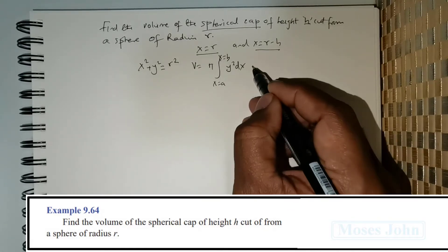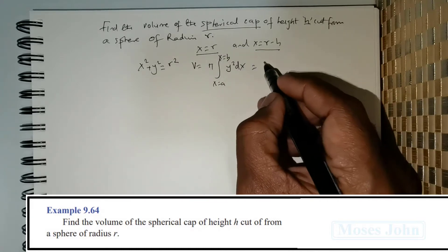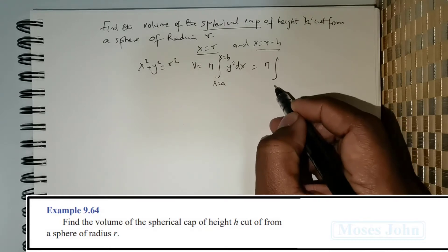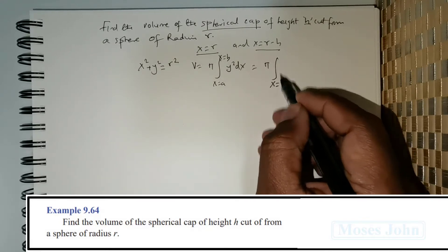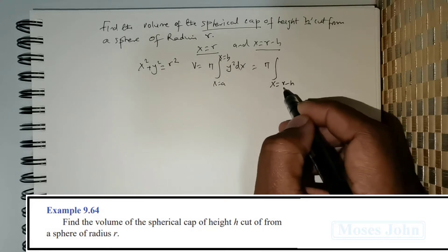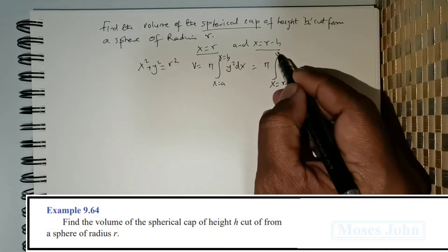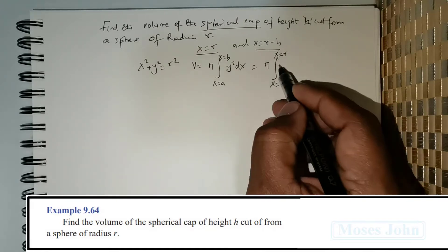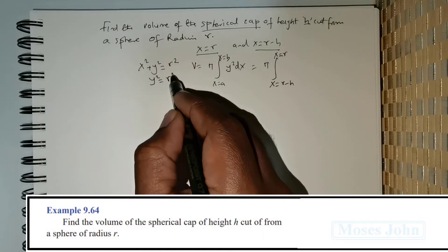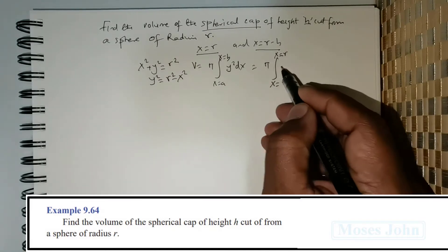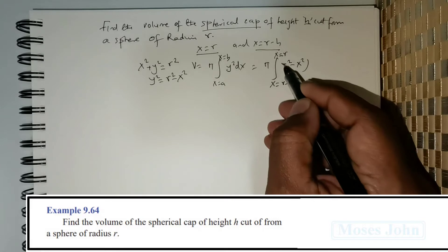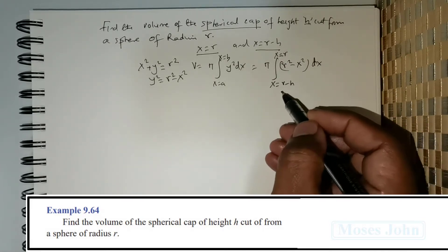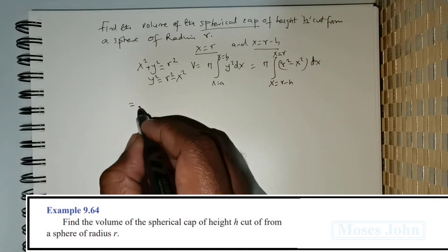Using this formula, we can rewrite it to obtain the spherical cap's volume. That is π times the integral from x = r − h (the smallest limit) to x = r (the largest limit) of y² dx. From here, y² can be rewritten as r² − x², and we substitute that quantity and apply integration.